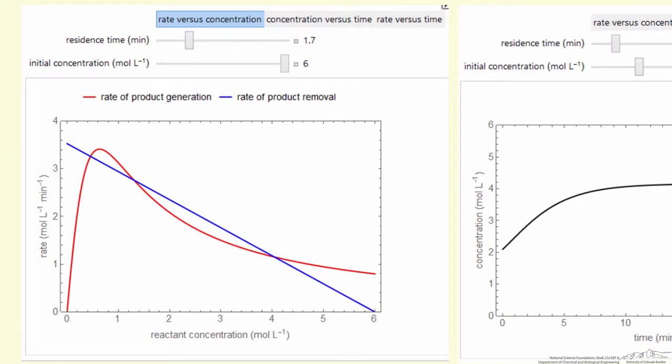Plotting the red line on the left is the rate of product generation, so that corresponds to how the rate depends on concentration, and then the blue line corresponds to the mass balance, how the material is being removed from the reactor.